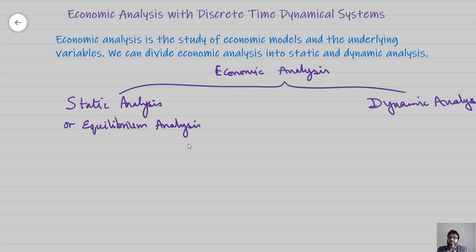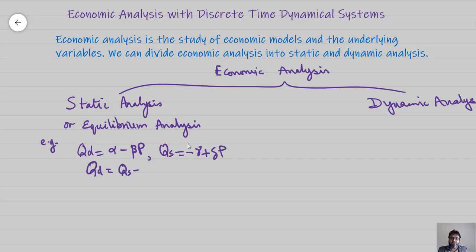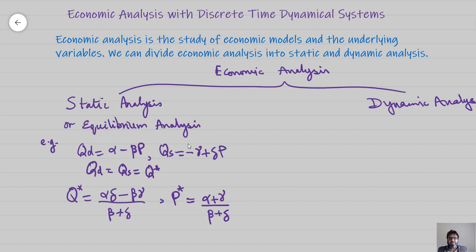Static analysis is also known as equilibrium analysis. For example, consider the demand and supply model where we have to find equilibrium values of price and quantity. When we impose the equilibrium condition that quantity demanded equals quantity supplied at Q*, we find Q* equals (alpha*delta minus beta*gamma) over (beta plus delta), and the equilibrium price becomes (alpha plus gamma) over (beta plus delta). This comes under static analysis. Likewise, we learned about the national income determination model where we find equilibrium values of consumption, income, and taxes.